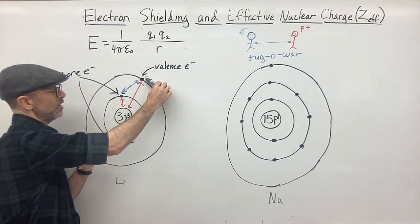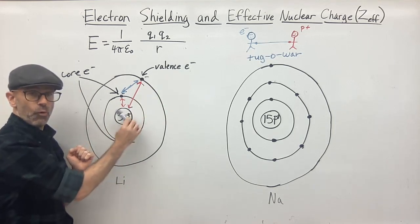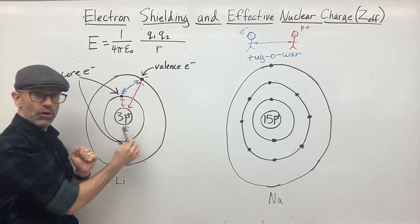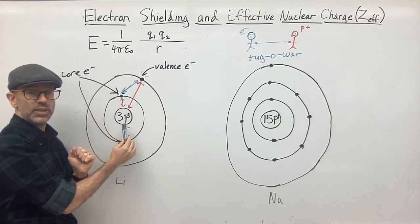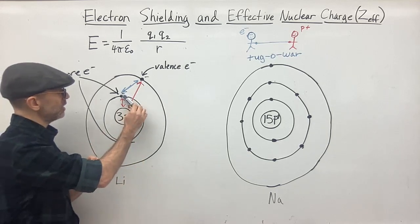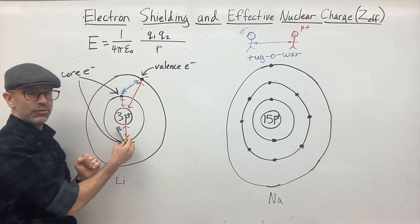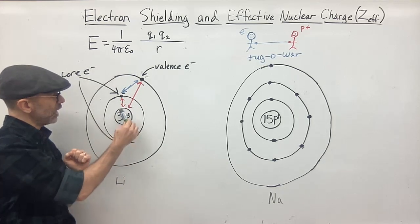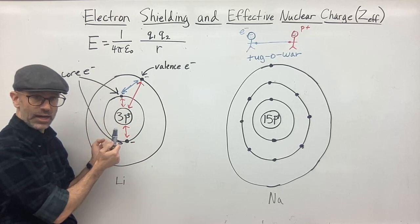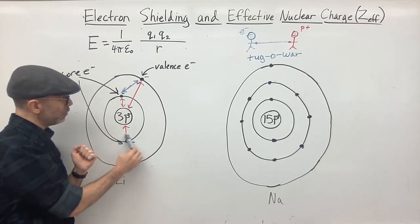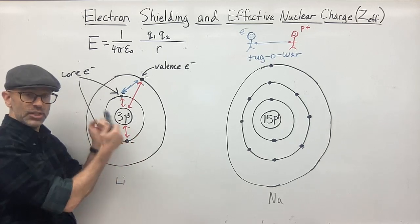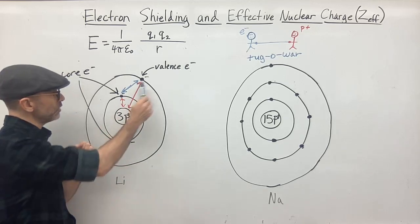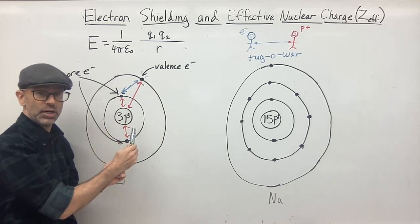If these two electrons were not here, this electron would feel the full force of the three positive charges of the nucleus. But because these two inner electrons are there, they have a repulsive force — they're pushing the electron away. So the pushing of these inner core electrons cancels out some of the pull of the nucleus. This electron cannot feel the full force of the three protons; it's more like it's feeling the force of one proton.